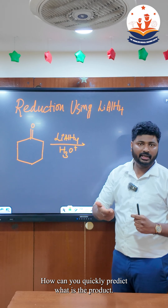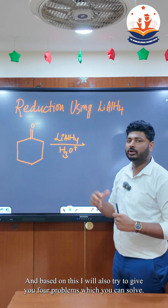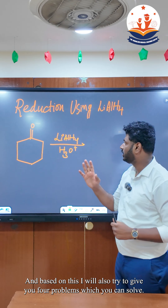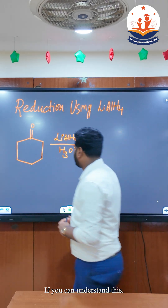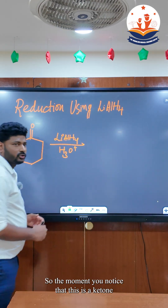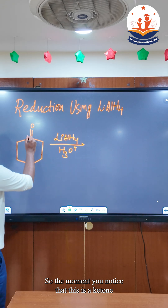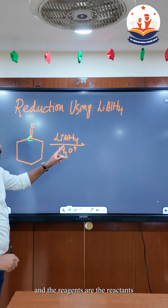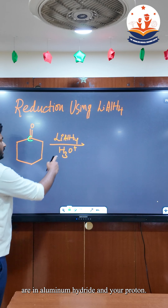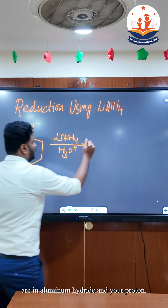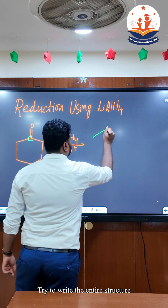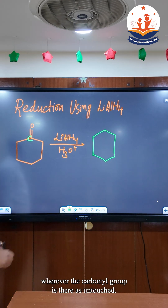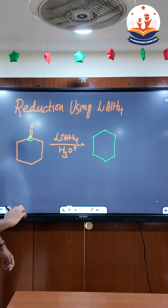How can you quickly predict what the product is? Based on this I'll also try to give you four problems which you can solve if you understand this. So the moment you notice that this is a ketone and the reagents are lithium aluminium hydride and a proton, try to write the entire structure with the carbonyl group untouched.